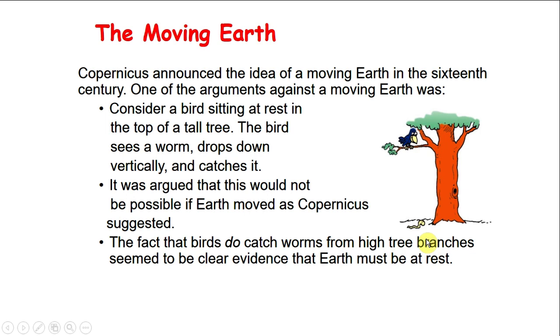Now it was argued that this would not be possible if Earth is moving as Copernicus suggested. Because as the bird is going down, flying down, Earth is moving very fast. And since the worm is on the ground, it's going to move with Earth, so the bird will never be able to catch it.